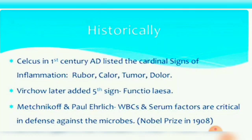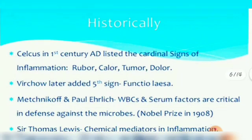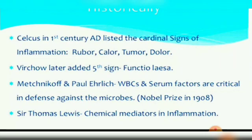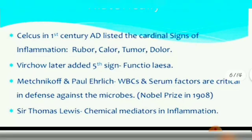Historically, Celsius in the first century AD listed the cardinal signs of inflammation: rubor, calor, tumor, and dolor. Virchow later added the fifth sign: functio laesa. Metchnikoff and Paul Ehrlich identified WBCs and serum factors as critical in defense against microbes, earning the Nobel Prize in 1908. Sir Thomas Lewis identified chemical mediators in inflammation.